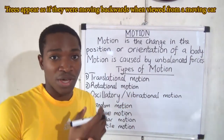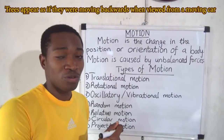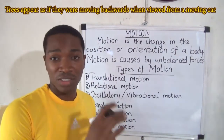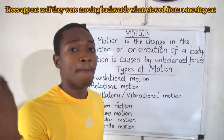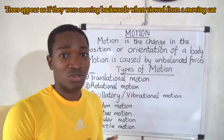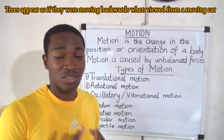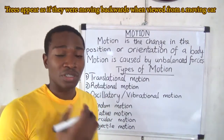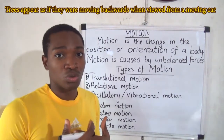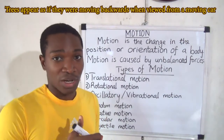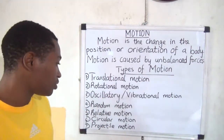For example, when you're in a car and your car is moving forward, if you look out at trees, the trees appear as if they are moving backward, but they aren't actually moving backwards. That is relative motion — the trees are moving backward relative to you who is in the car.